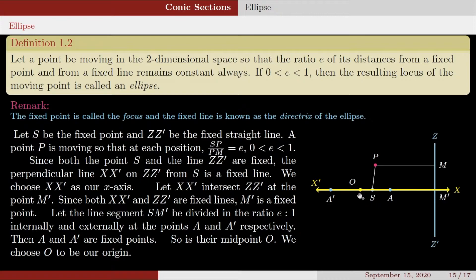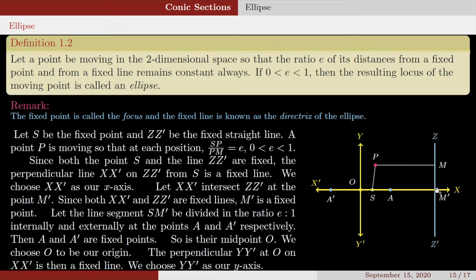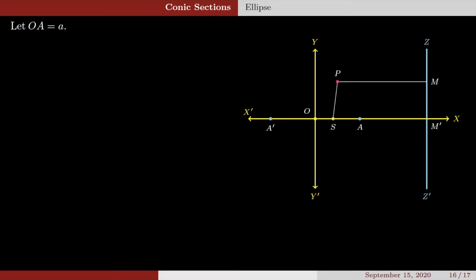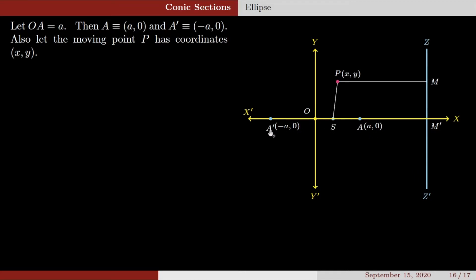Their midpoint O will be a fixed point as well — we choose O as our origin. The y-axis will be perpendicular to XX' at O, which is also a fixed line. So we have chosen our axes wisely. Let OA equal small a. Then point A is (a, 0) and A' is (−a, 0), since O is the midpoint. The moving point P has coordinates (x, y) in this reference frame.